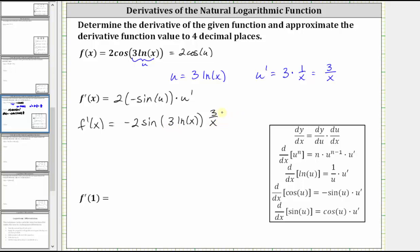Now let's go ahead and simplify a little bit further. Let's multiply negative two and three divided by x. Negative two as a fraction has a denominator of one. Let's write f prime of x as f prime of x is equal to negative six divided by x times sine of three natural log x.